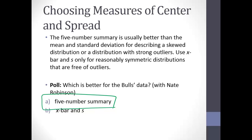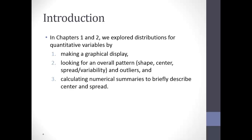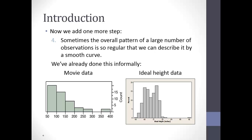The mean and standard deviation would not be the worst thing you could do, but if we're talking about which one is better, I'm going to go with the five-number summary because we do have some skew showing up in our data set. Very good. Here we go with chapter three, titled 'The Normal Distributions.' We've made displays and looked for overall patterns — we talked about shape, center, spread, and outliers. Now sometimes the overall pattern of a distribution can be described by a smooth curve.